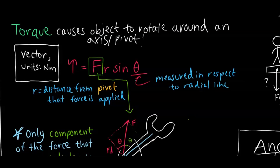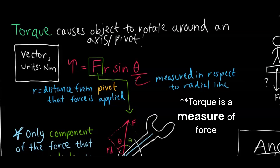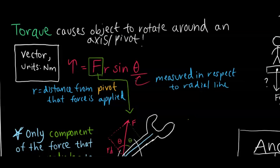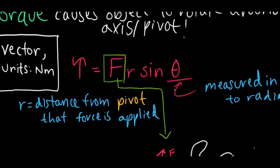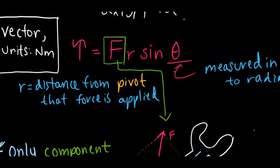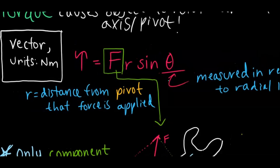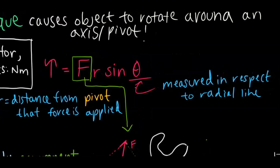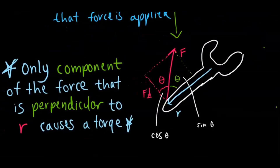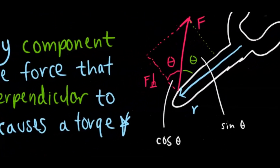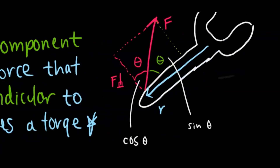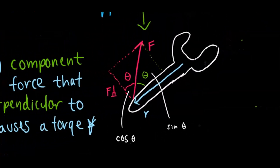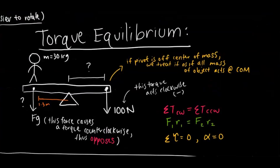Torque is not a force exactly, but it's the thing that causes objects to rotate around an axis or pivot — it's a way to represent the collection of all forces. Torque equals force times R, where R is the distance from the pivot that the force is applied (also interpretable as radius). Theta is measured with respect to the radial line. A wrench diagram shows that only the component of force perpendicular to the radial line causes torque. You can use cosine with one angle or sine theta with the other depending on which angle you reference.